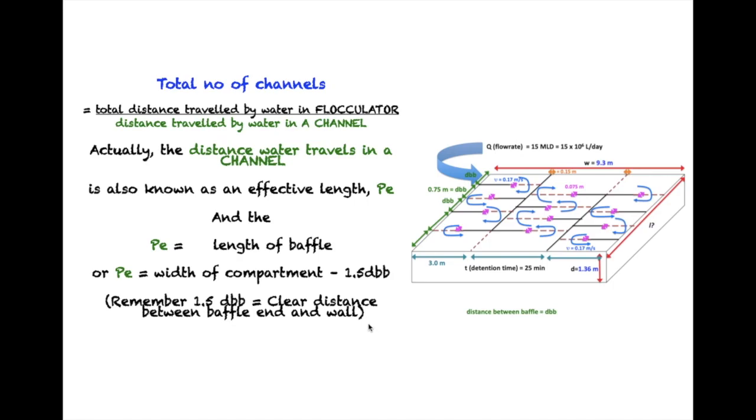Right, let's find out our PE so that we can put it in this equation. We have already got the value for the total distance traveled by water. So then after that we will be able to find out the total number of channels in this flocculation tank.